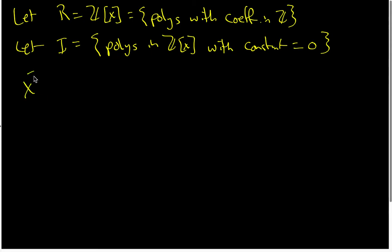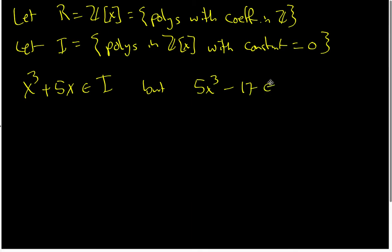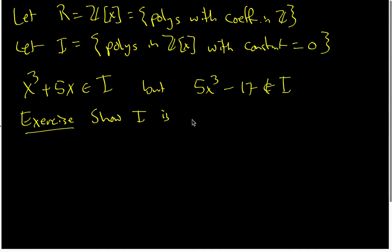So X³ + 5X does belong to I, but 5X³ − 17 does not belong to I. Now it is an easy exercise to show that I is an ideal of the ring Z[X], and I would encourage you to stop the video and show that for yourself before continuing.